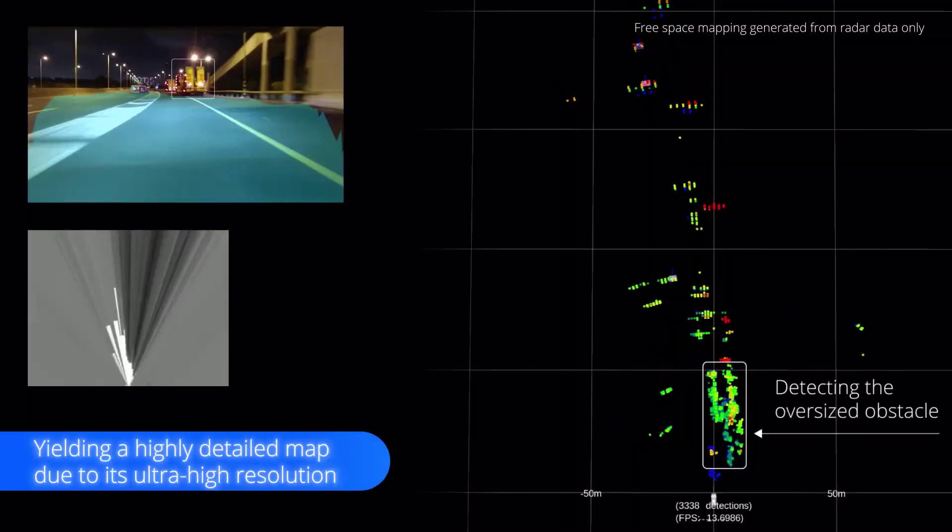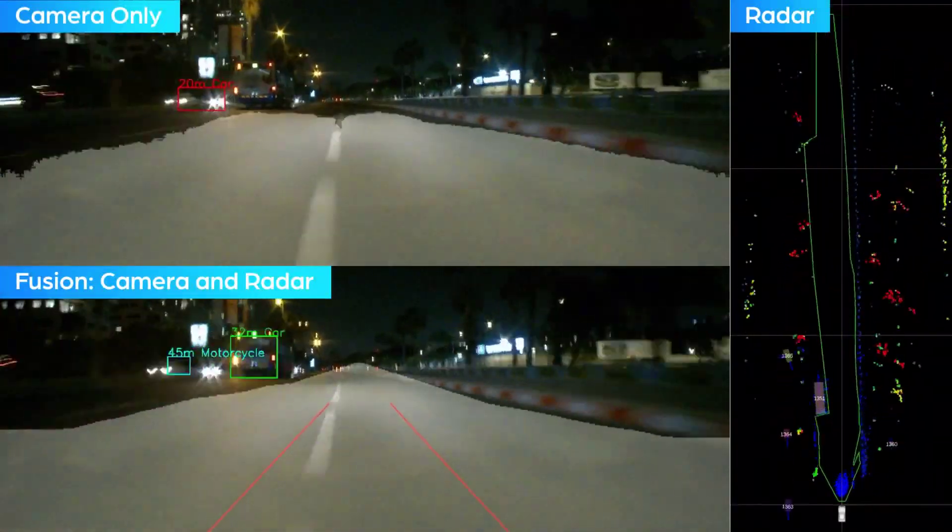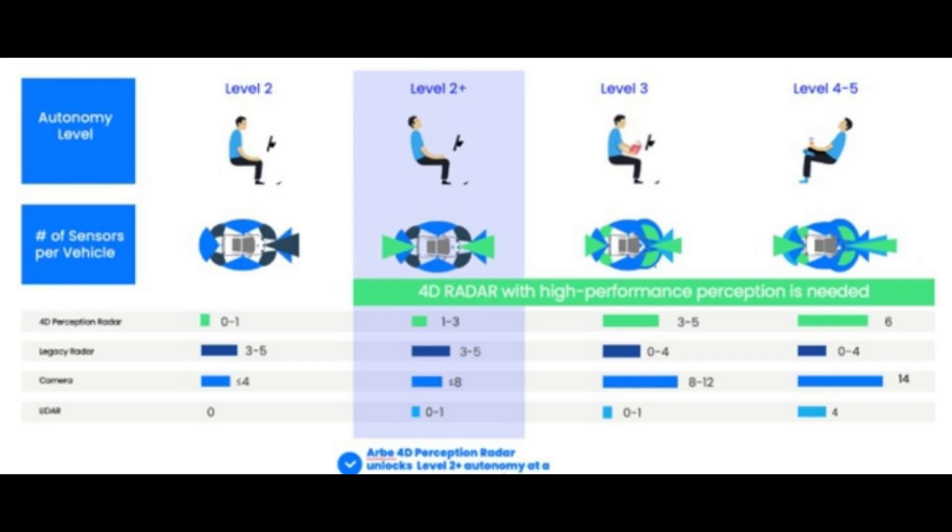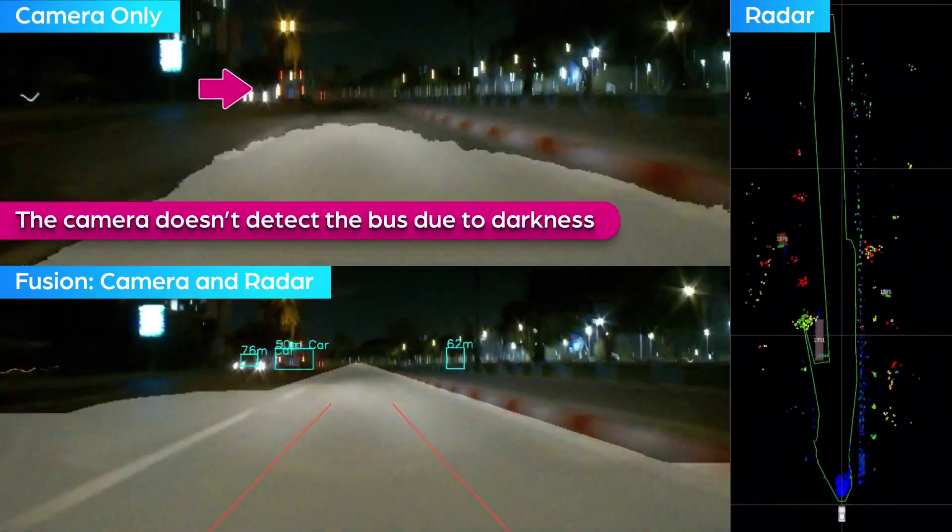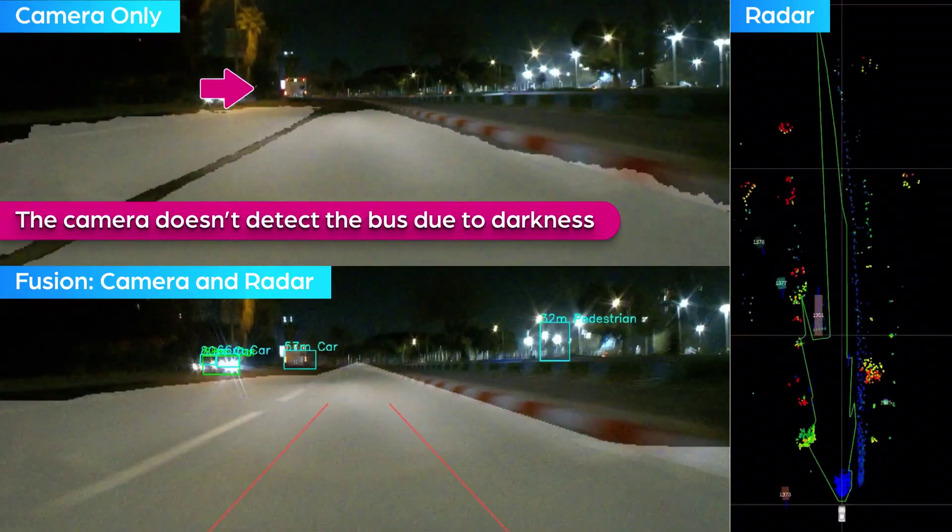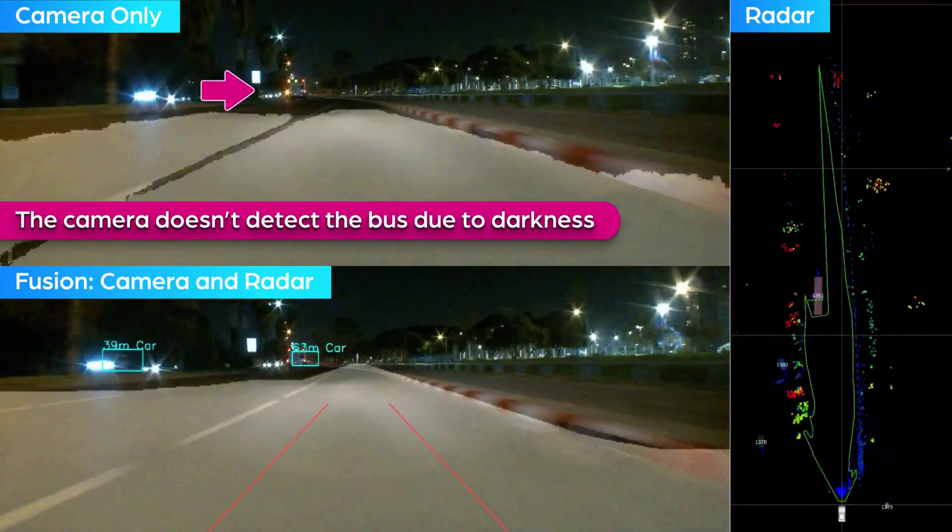Arbe Radar is designed for various levels of vehicle automation, especially Level 2++ and Level 3, focusing on features like collision warning and adaptive cruise control to improve accident prevention and hands-off driving.